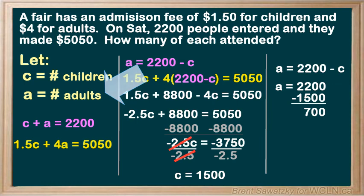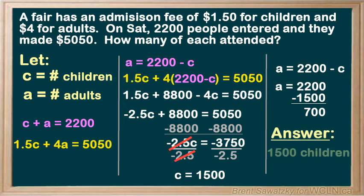So we've solved it. We've determined that on that day there were 1500 children and 700 adults.